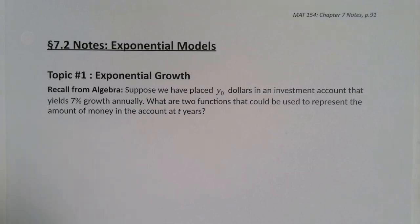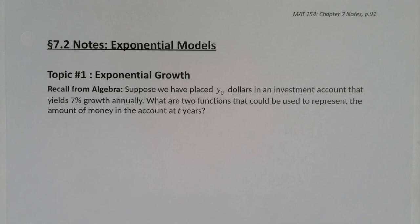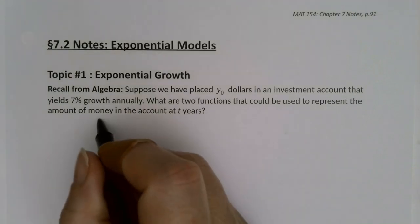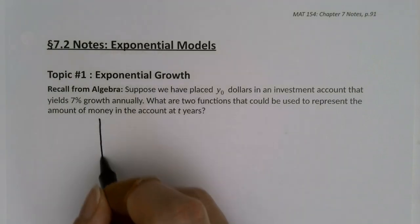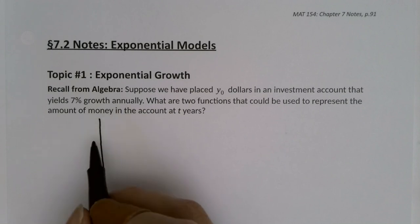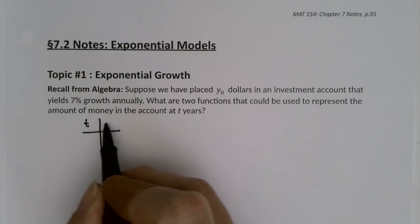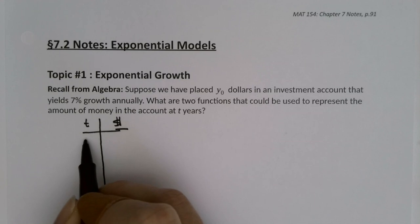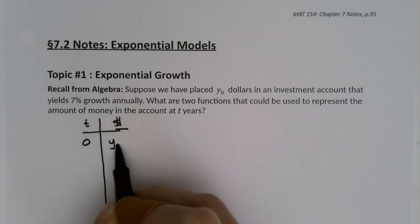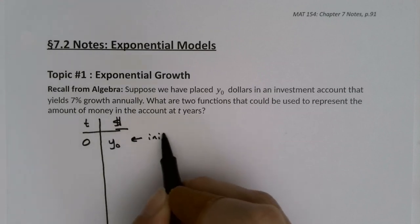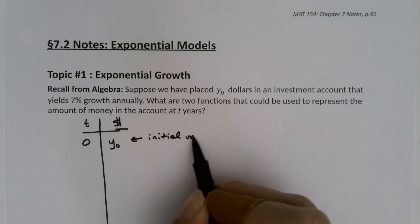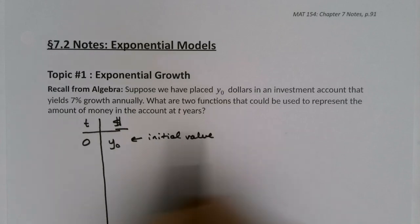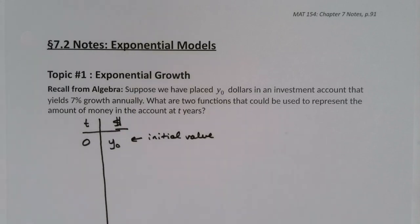What are two functions that could be used to represent the amount of money in the account after two years? So let's think about this: when time is zero, we have Y-zero — that's our initial value.